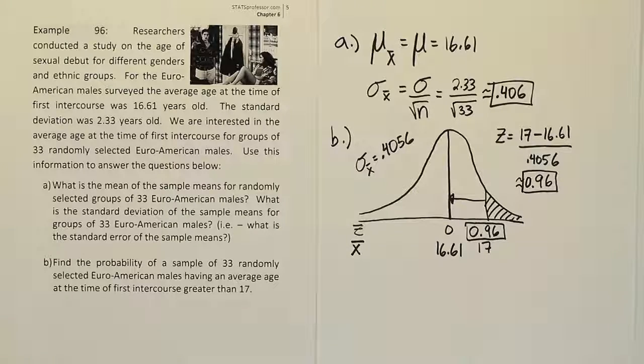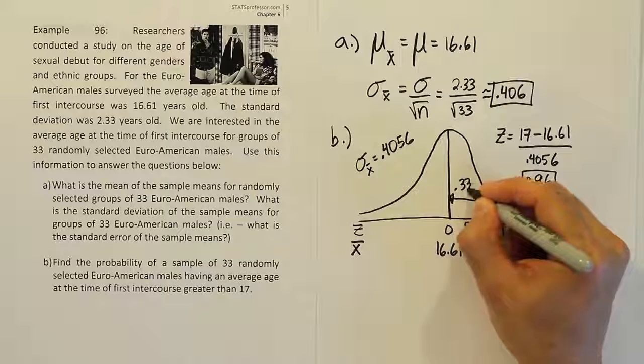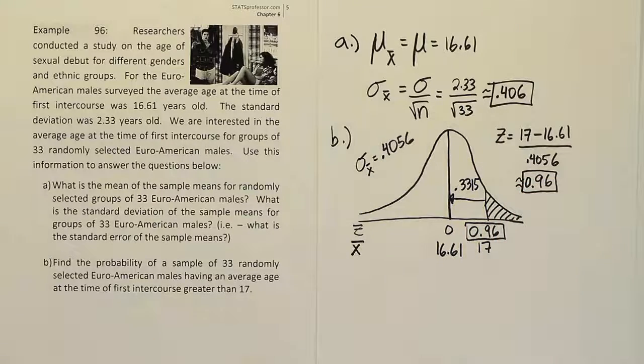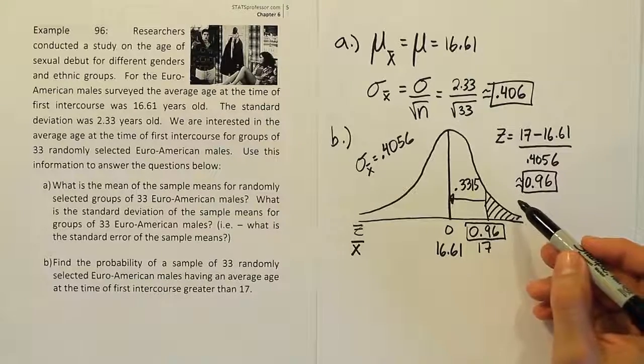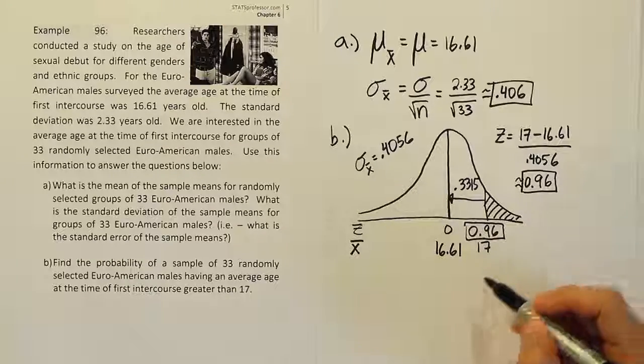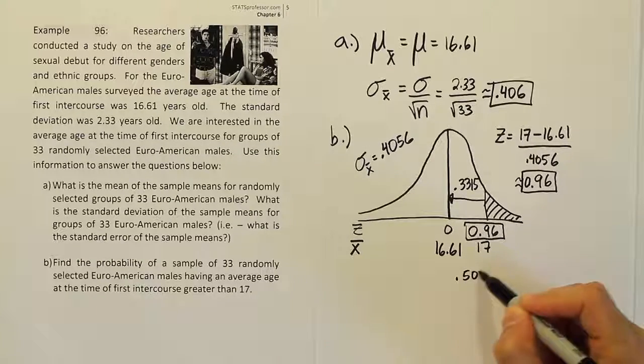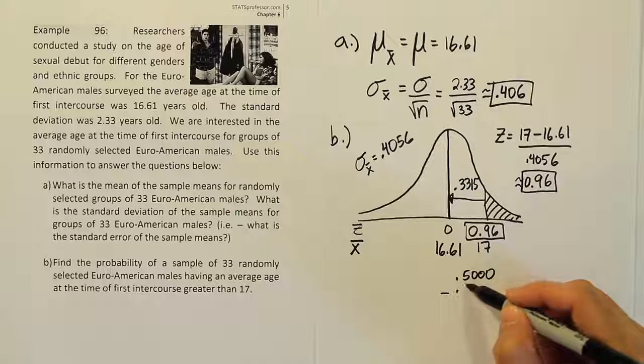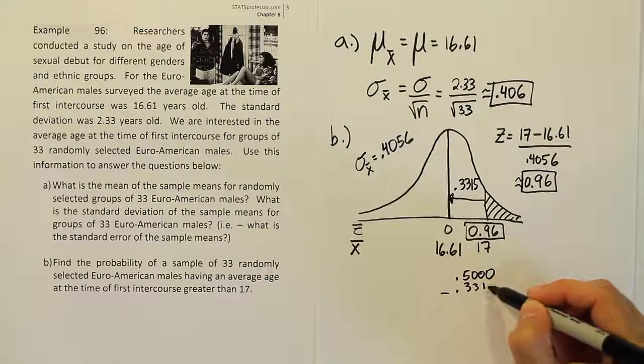So we found the answer 0.3315. That is the value when we look up 0.96 on our Z-chart. Now from there, what's left over in the tail? To find the final area, we're going to say, hey, half of the curve is 50% minus the 0.3315.